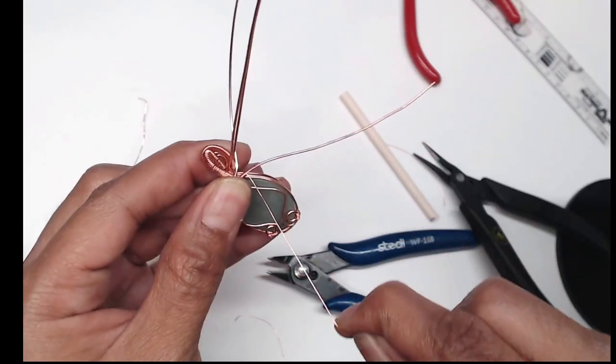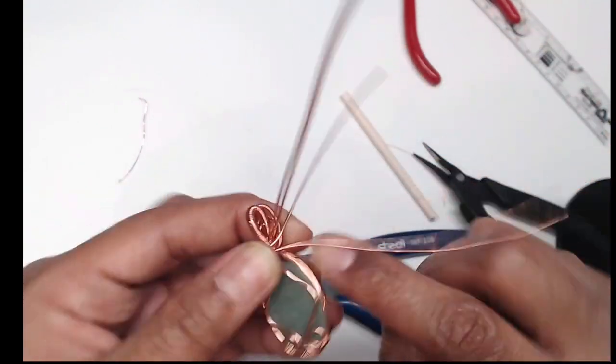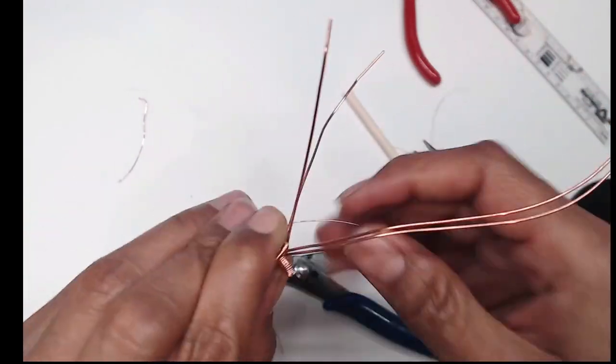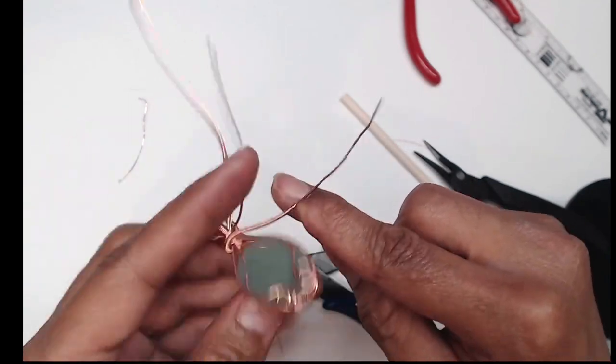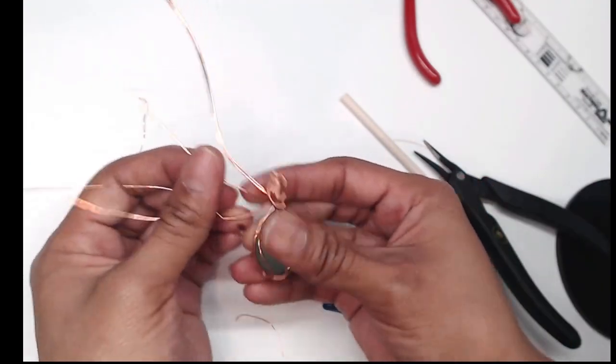I didn't coil my wire enough, so all I'm doing right now is continuing to coil on that wire so that the coil design can continue when I continue wrapping this around the front. Now that I've extended my coiled piece I can continue the accent.